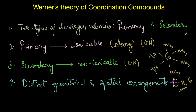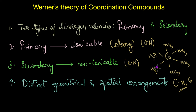If the coordination number is four — where the metal atom is bonded to only four ligands — two different polyhedra are possible: tetrahedral or square planar arrangement. We will look at coordination polyhedra in more detail when discussing bonding. In the next video, we will discuss important terminologies related to coordination compounds, such as what a ligand is, the different types of ligands, what a coordination entity is, and so on.